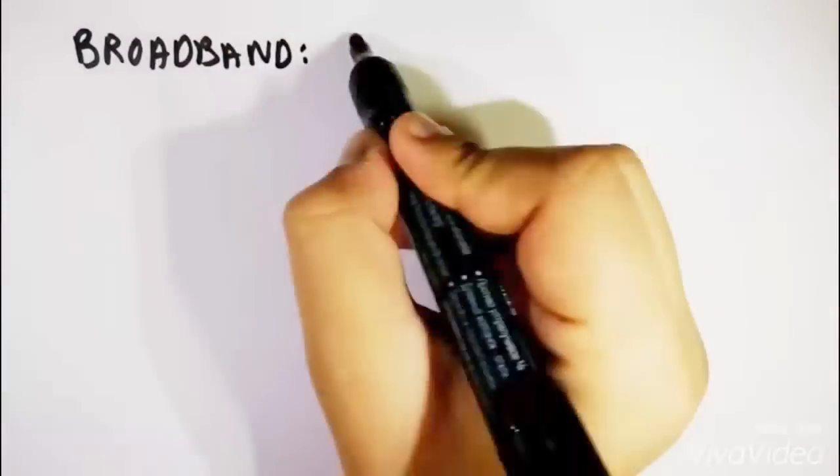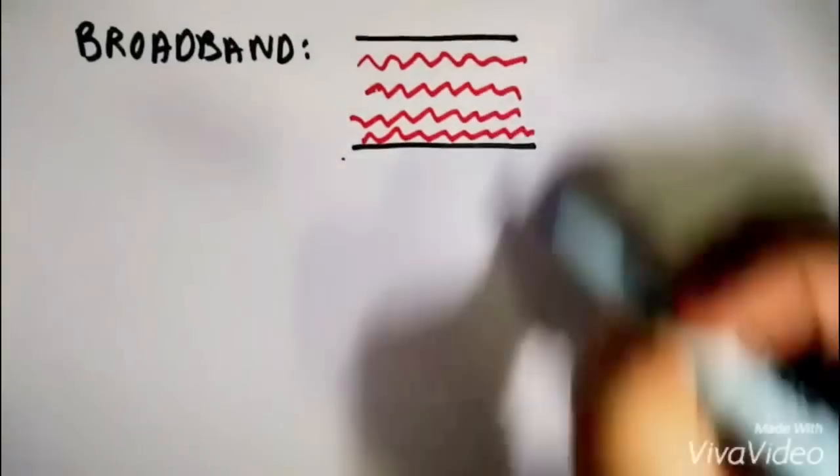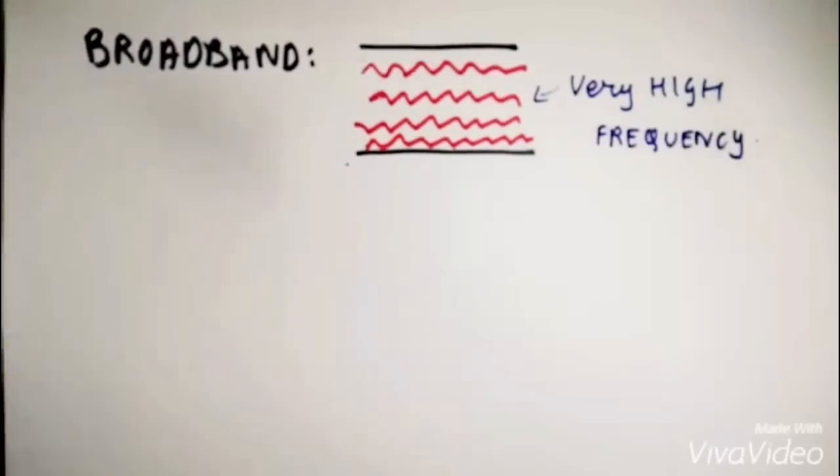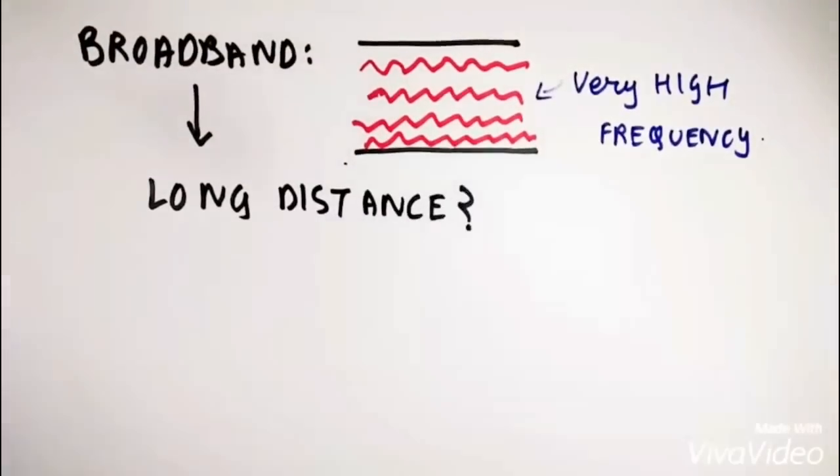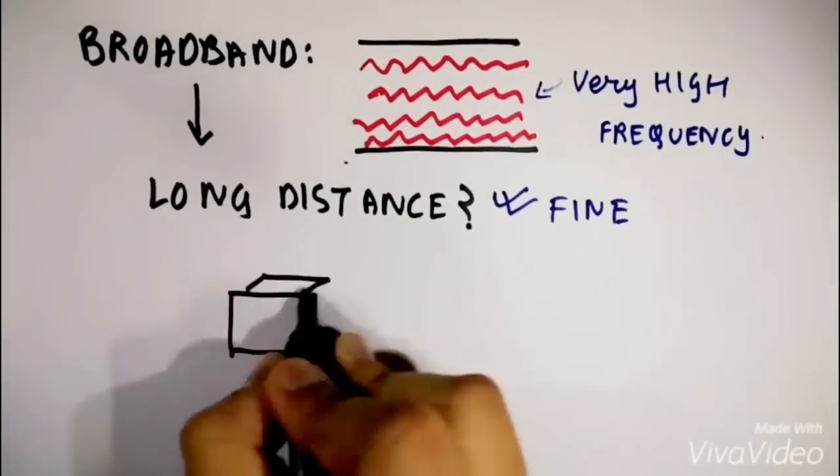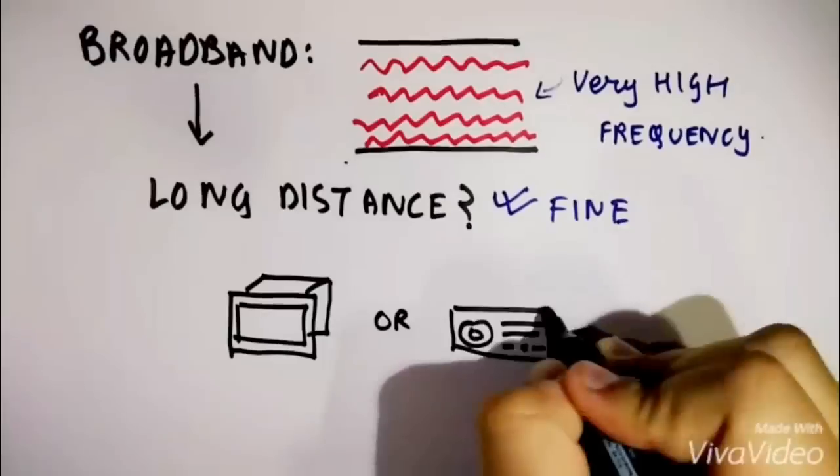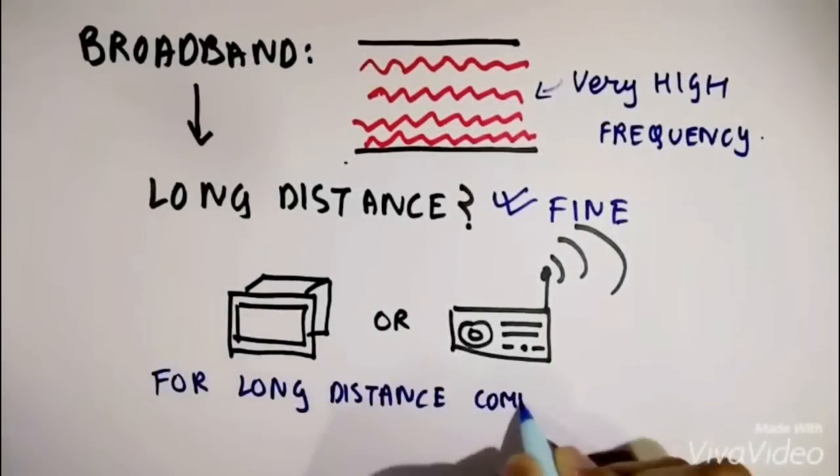Broadband on the other hand uses very high frequency waves to transmit the information signal. Such waves can travel over long distances very easily. Hence a broadband connection is used in long distance communication devices like television sets or radio sets.